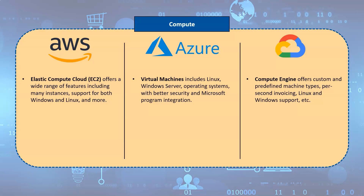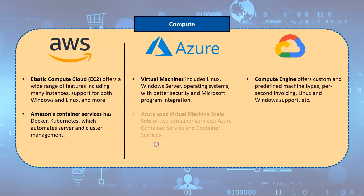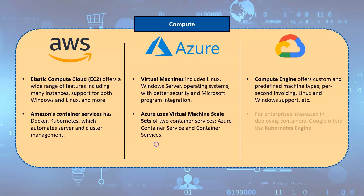Within the compute category, Amazon's container services are gaining prominence. It has Docker, Kubernetes, and its Fargate service, which automates server and cluster management when using containers. Azure, unlike AWS, uses virtual machine scale sets. Its Azure Container Service is based on Kubernetes and uses Docker Hub and Azure Container Registry for management. For enterprises interested in deploying containers, Google offers the Kubernetes Engine. It's worth noting that Google was significantly involved in the Kubernetes project, giving it extensive knowledge in this field.